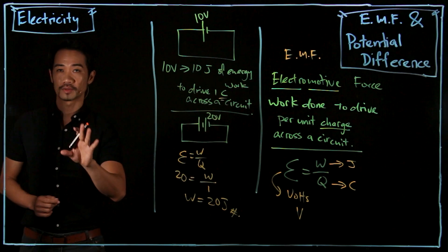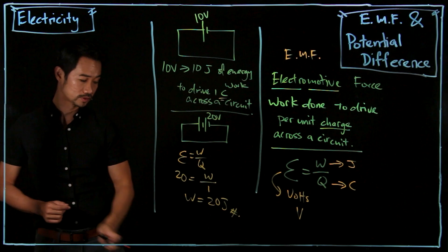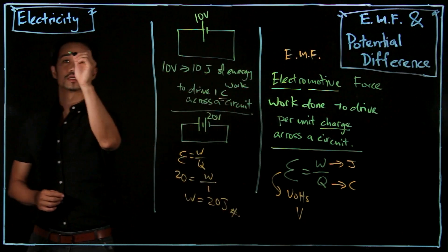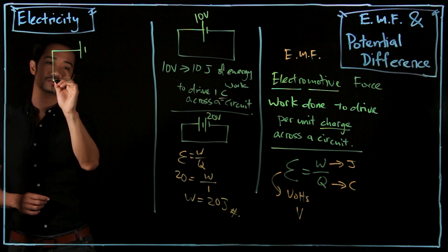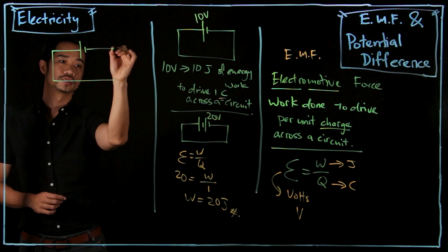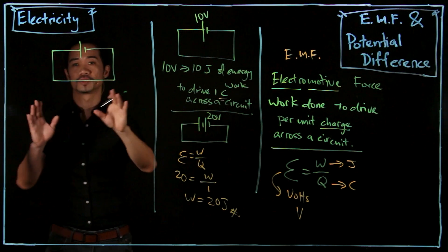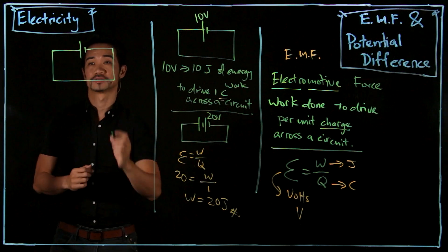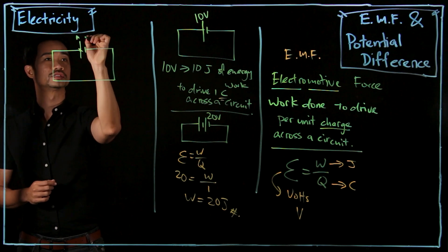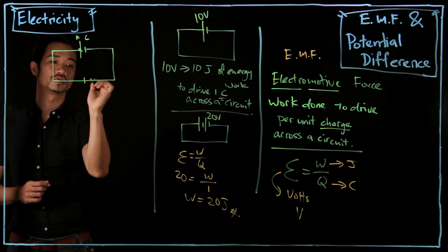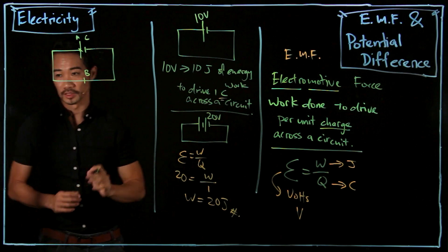Next is the concept of potential difference. Let me draw another circuit here. So we have a dry cell, let's have a closed circuit. Now I'm going to break up the circuit into parts. Let's say I call this point A, this is point C, and right in the middle here is point B.